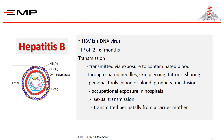Transmission also occurs through occupational exposure in hospitals, sexual transmission, and perinatal transmission from a carrier mother. Egypt is an area of intermediate prevalence of hepatitis B.